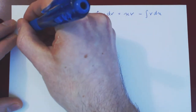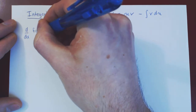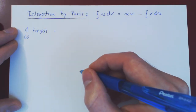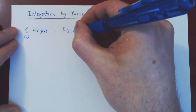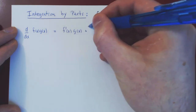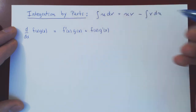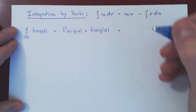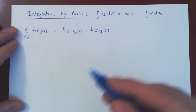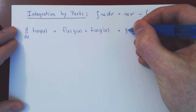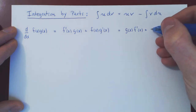Suppose we have two functions f and g, and I take the derivative with respect to x of the product f(x) times g(x). Applying the product rule, we get the derivative of f times g, plus f times the derivative of g. I'll just change the order and write this as g(x) times f'(x), and leave fg' as fg'.